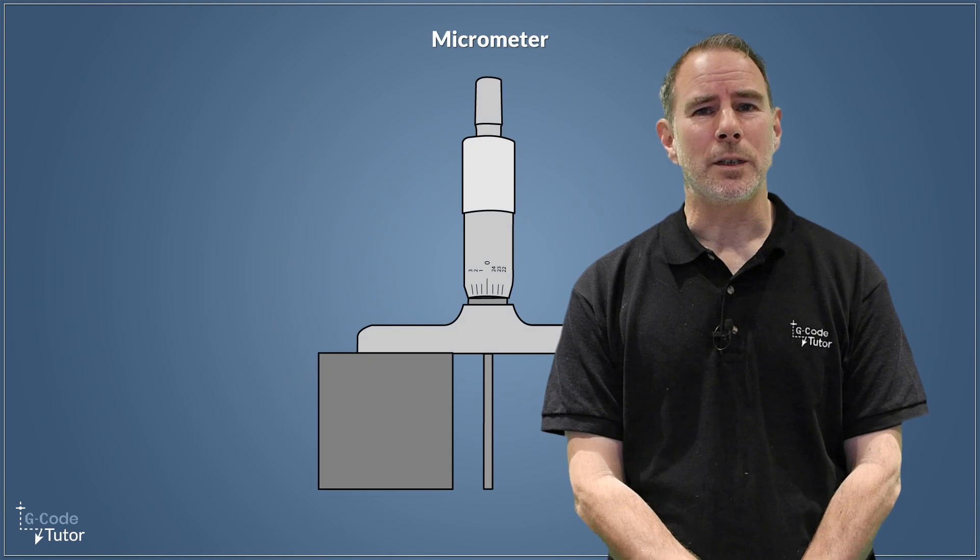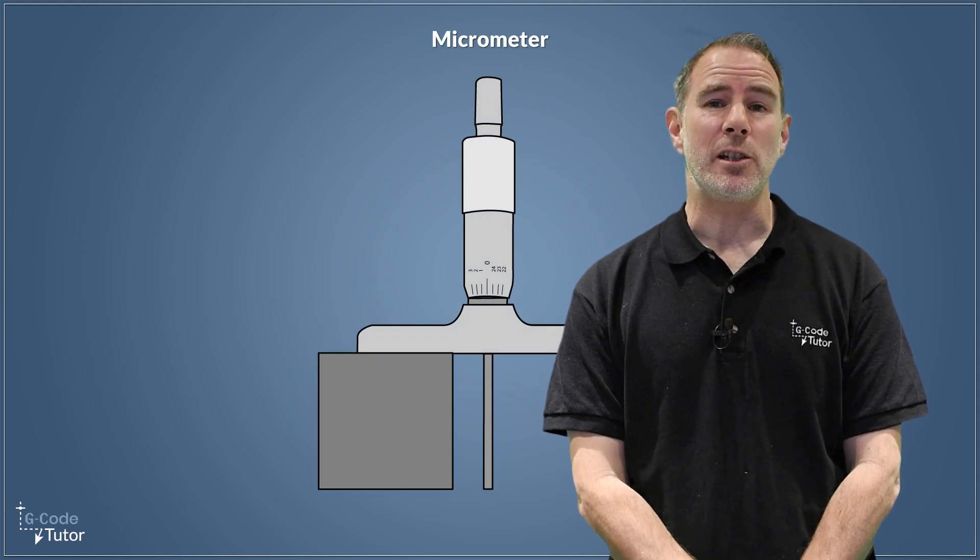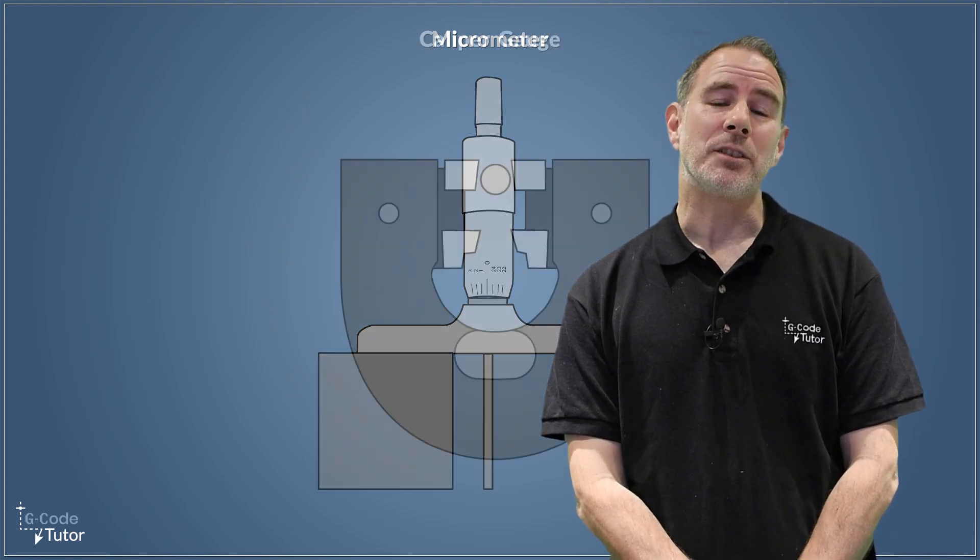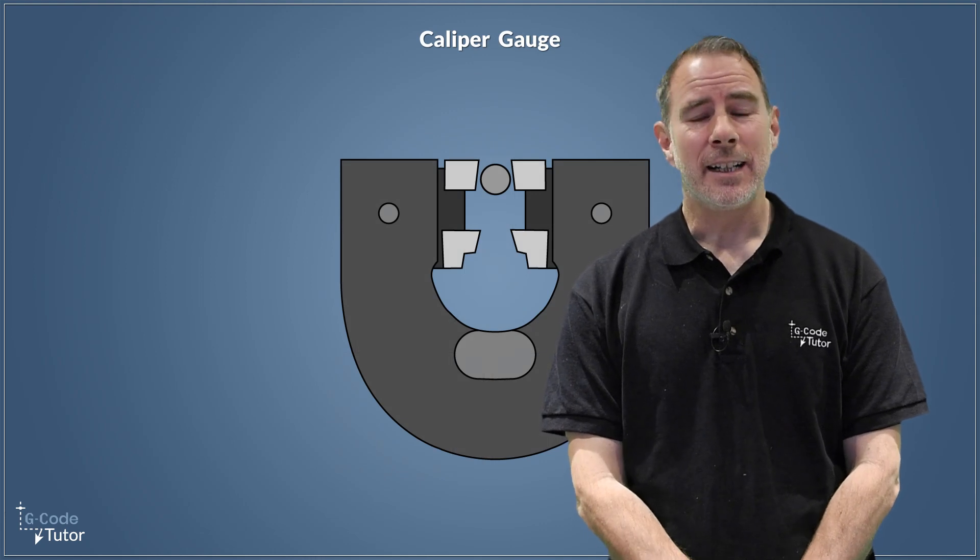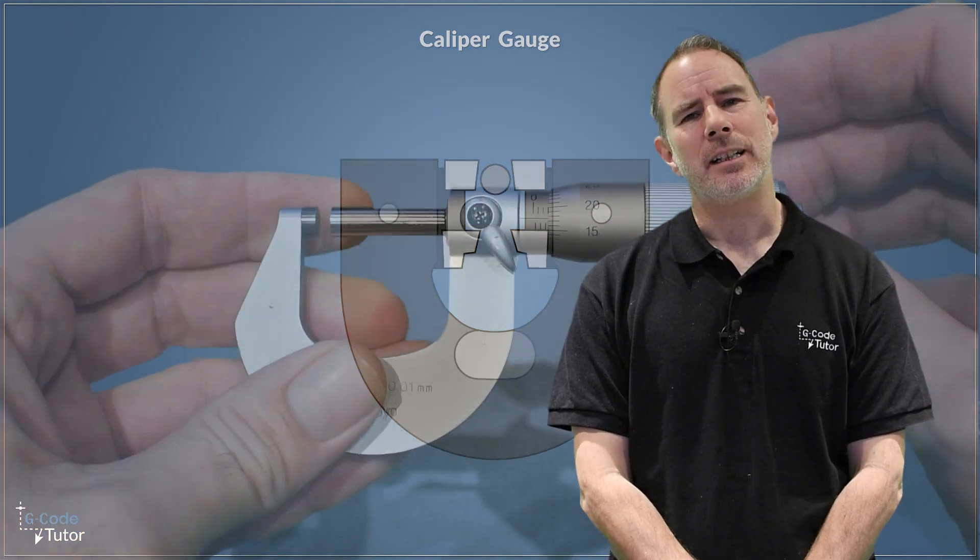So this course focuses on all the different measuring equipment we use in the machine shop, how to read them, how to maintain them, how to check that they're measuring accurately, and also how to calibrate them.